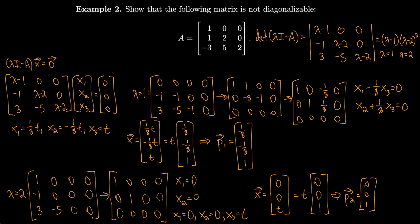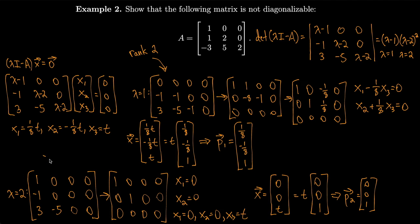Another way to see this: once you get to the reduced matrix for lambda equals 2, you can notice it has rank 2. By the rank-nullity theorem, rank plus nullity equals 3, so the nullity equals 1, meaning there's only one vector in the basis for that eigenspace. Similarly, the matrix for lambda equals 1 is also rank 2, giving only one vector in its eigenspace basis. So you only have two vectors total without even computing them — just knowing there are only two when you need three shows the matrix is not diagonalizable.